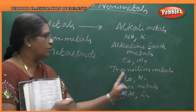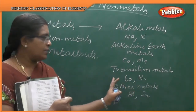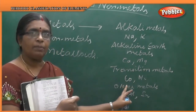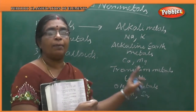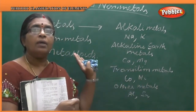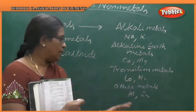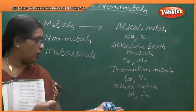Transition metals have certain similar properties. They come under transition metals — examples are cobalt and nickel. They are lying between metals and non-metals in character.